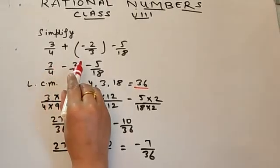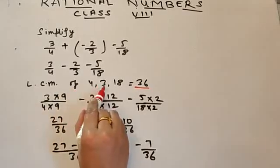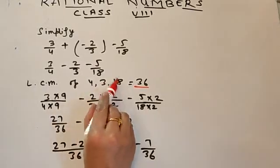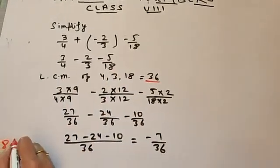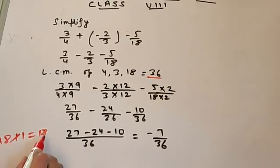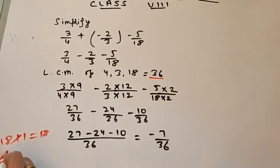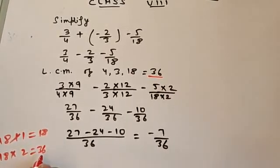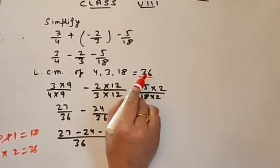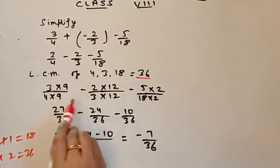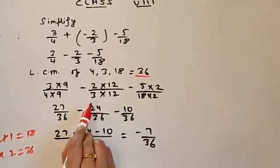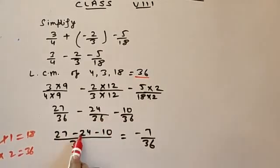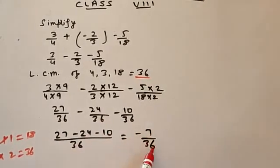Let's solve one more question. First we find the LCM of 4, 3, and 18 — the lowest multiple common to the tables of all three. 18 ones are 18, which comes in the table of 3 but not in the table of 4. 18 twos are 36, which comes in the table of 3 as well as in the table of 4. So 36 is the LCM. We then convert all fractions into equivalent rational numbers with denominator 36. Once the denominators are equal, we solve the numerators, and the answer is minus 7 upon 36.